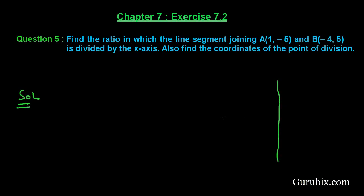Let us solve this question. First of all, let us draw a rough sketch of coordinate axes. This is the x-axis, this is the y-axis. The point (1, -5) will be almost here and point (-4, 5) will be almost here. If we join these two points, this is point A whose coordinates are (1, -5), and this is point B whose coordinates are (-4, 5).